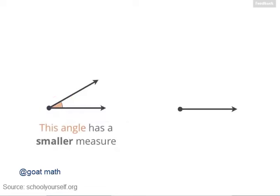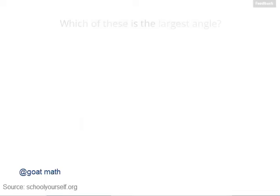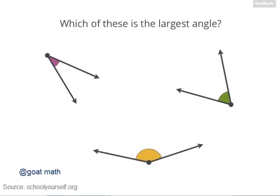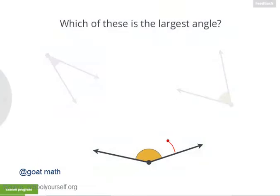Here's an angle with a smaller measure, because you don't have to rotate this ray very much so that it lies on top of the other ray. And here's an angle with a greater measure — you have to rotate this ray quite a bit. Now let's draw in three more angles. Which of these three angles is the largest? This angle down here is the largest. The size of an angle is commonly measured in units called degrees.